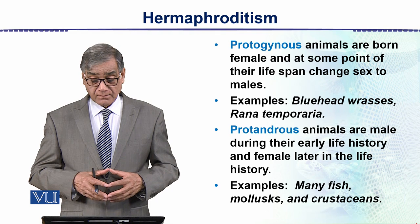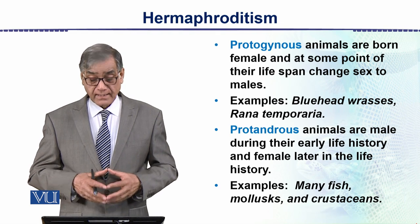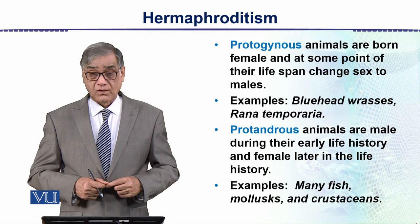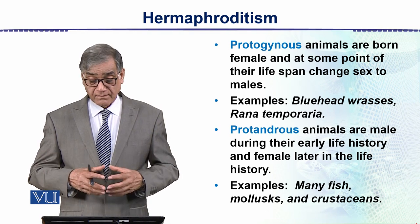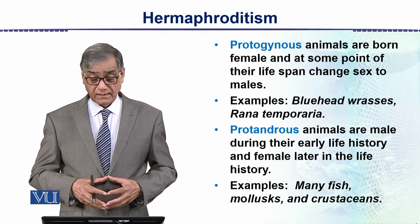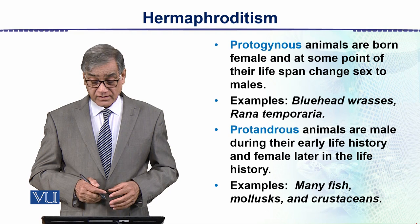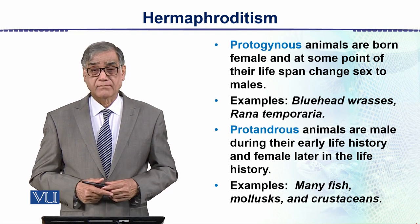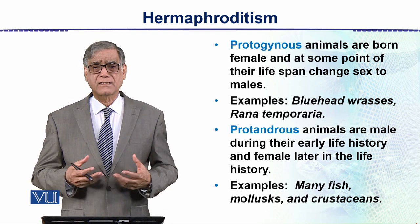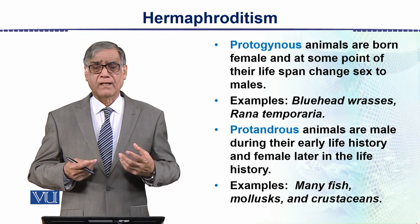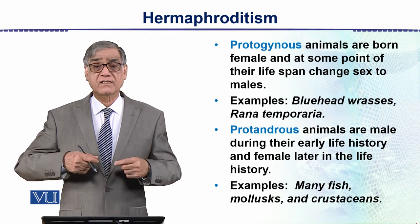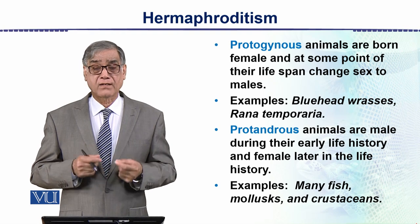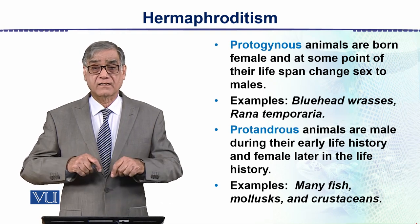Protandrous animals are male during their early life or by birth, but later they become female. There are many fish in which sex reversal occurs, and in certain cases this sex reversal is induced experimentally.